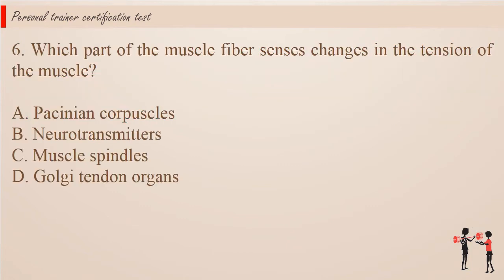Question 6. Which part of the muscle fiber senses changes in the tension of the muscle? a. Pacinian corpuscles. b. Neurotransmitters. c. Muscle spindles. d. Golgi tendon organs.